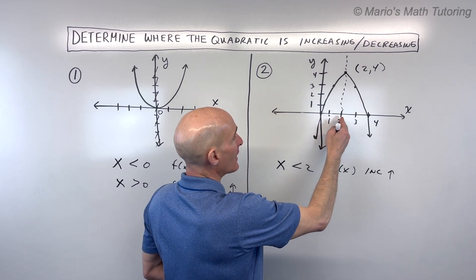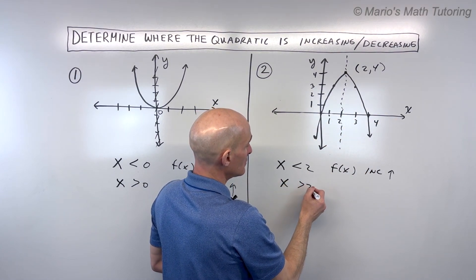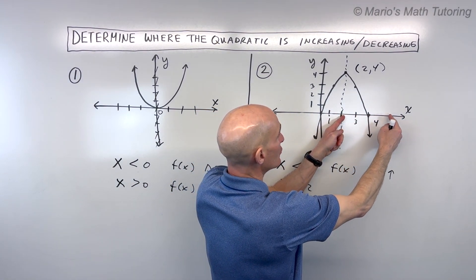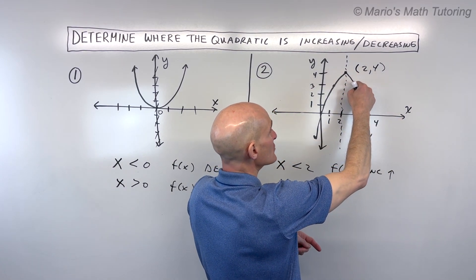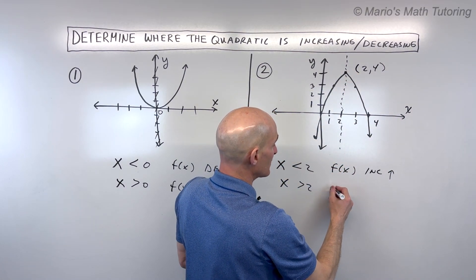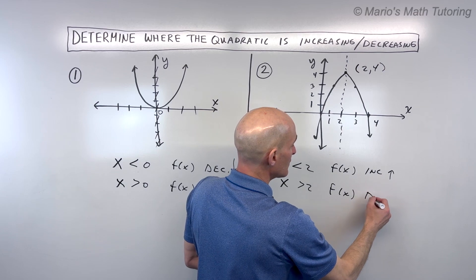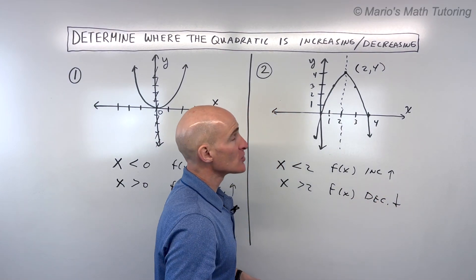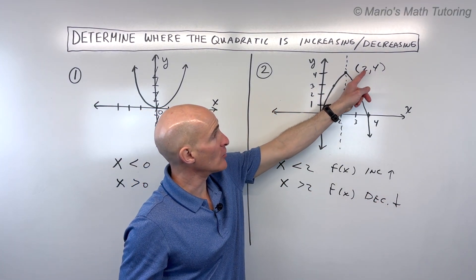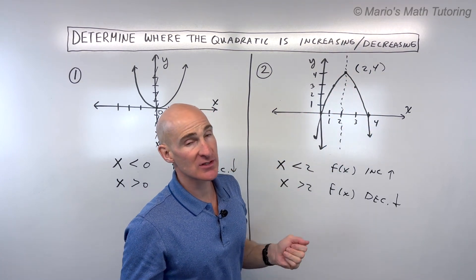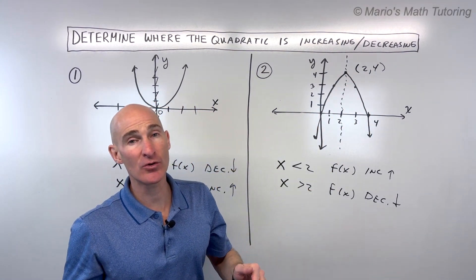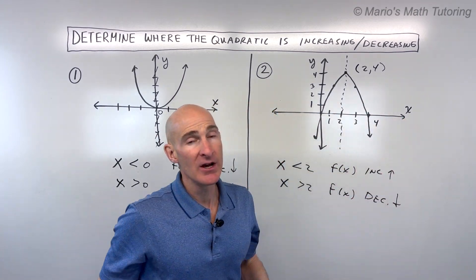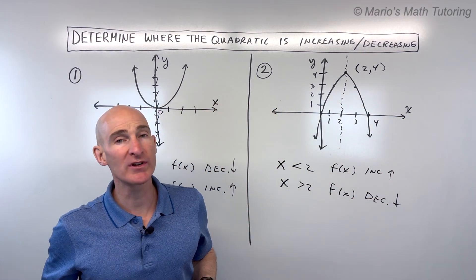When x is greater than 2, meaning when I'm to the right of 2, as x is increasing, the y-values are decreasing. So, again, don't look at the y-value — look at the x-values. For what x-values are the y-values increasing or decreasing? You always want to think about going from left to right. Let's do two more examples — see if you can do these ones on your own first, and then we'll go through them together.